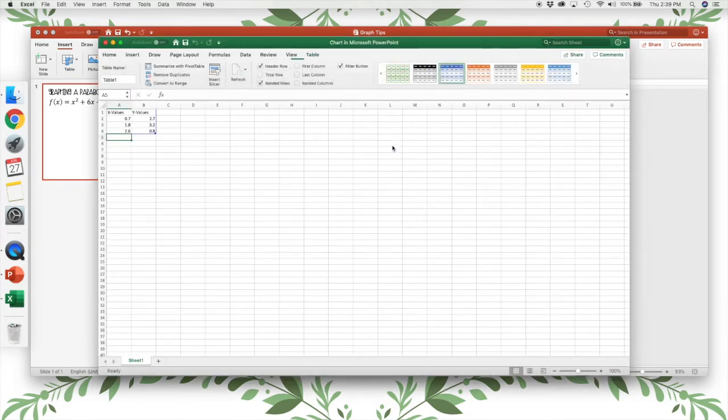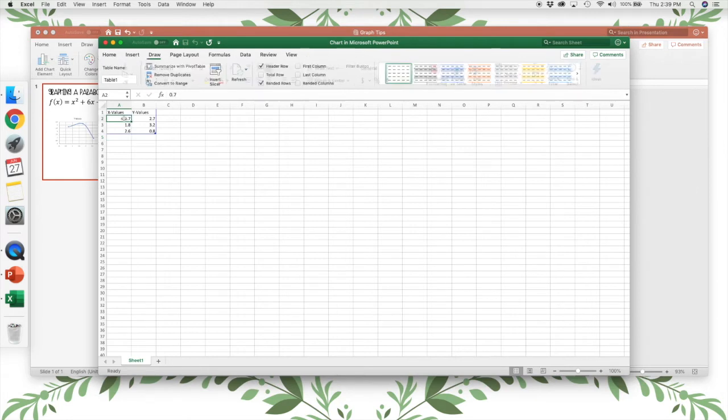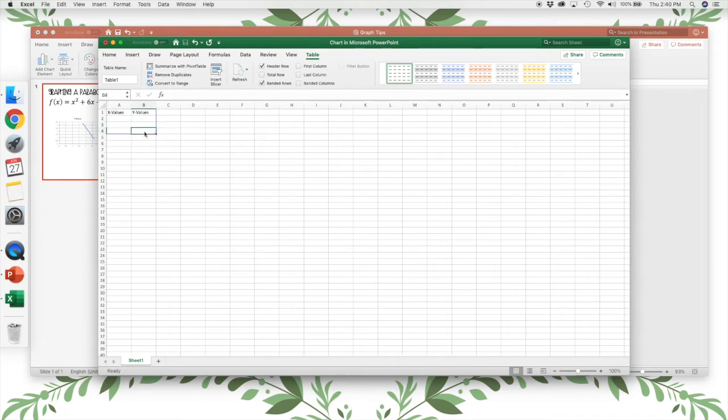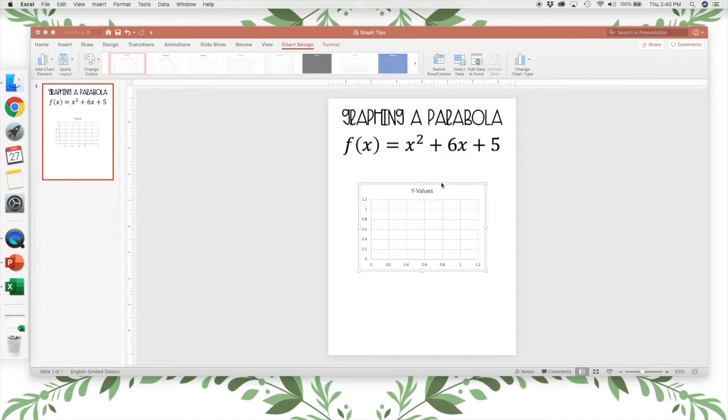It'll have points already there for you, so you want to delete the points first. So I'm just going to click in the cell, press delete until all the points are gone. Then I will minimize my Excel spreadsheet for right now, because I need to make my chart look more like a coordinate plane.